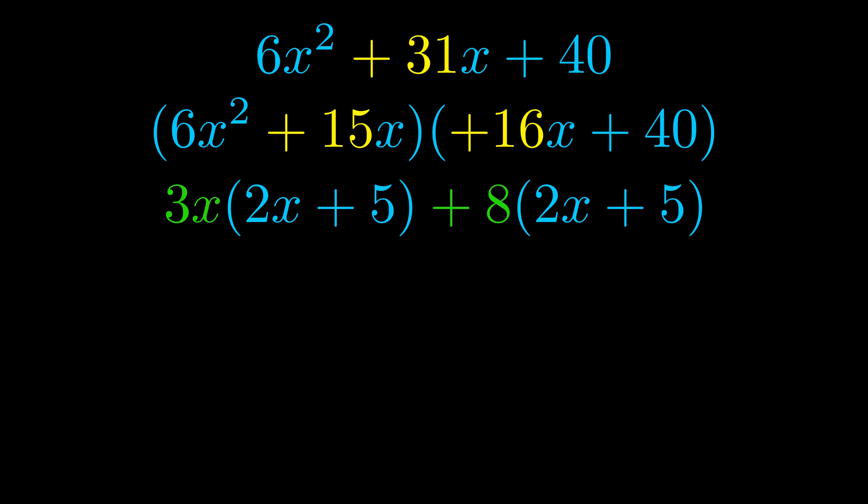Notice also how what remains inside of the parentheses is the same in both cases. The blue values are the same. Those blue values will become one of our factors and we will combine the two green values, the GCFs that we pulled out, to get the other one. And that is our fully factored equation.